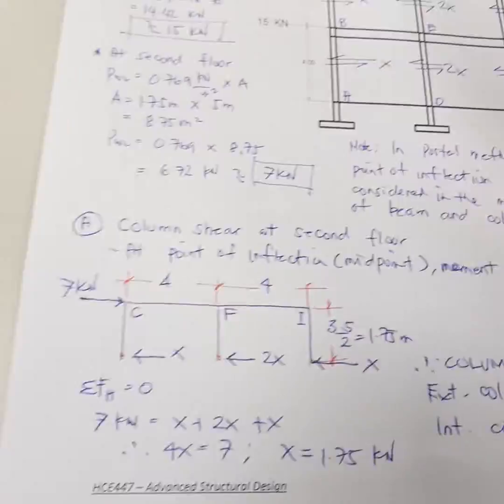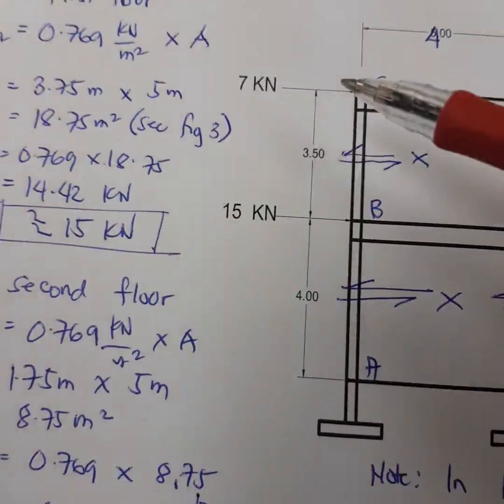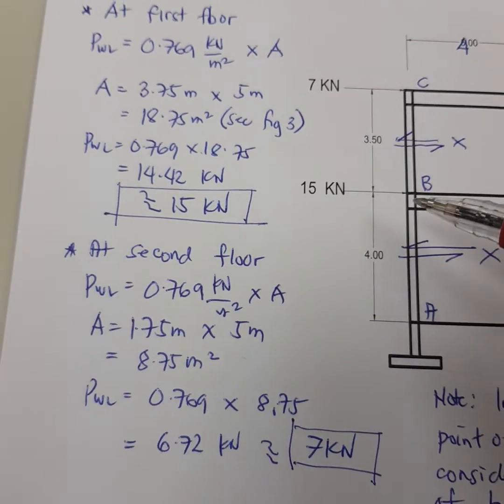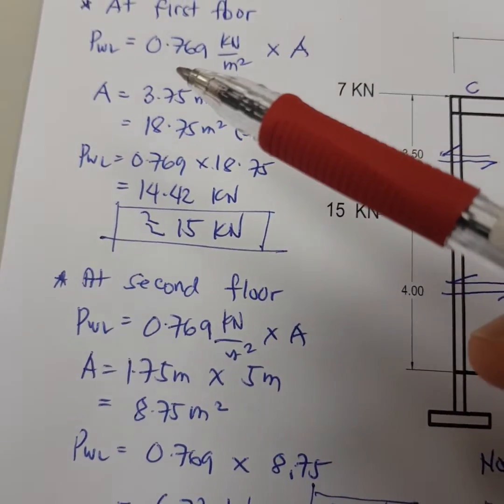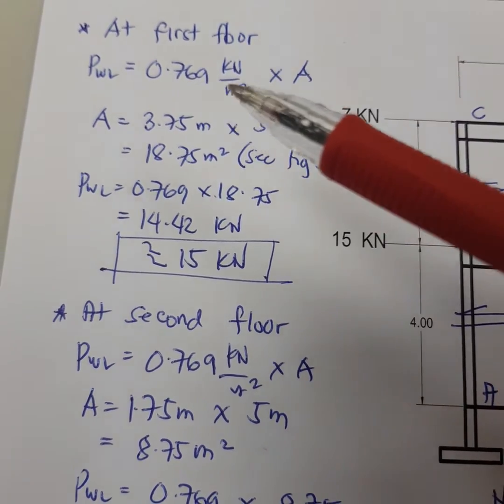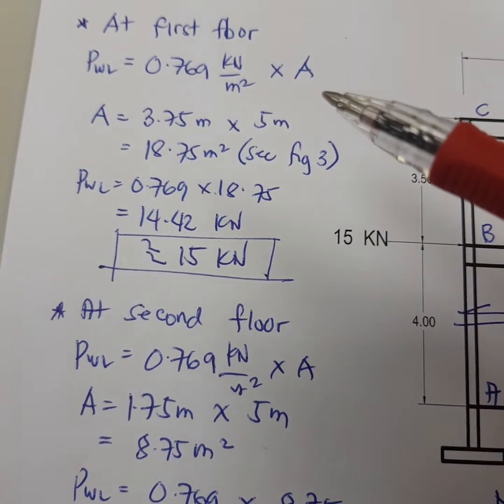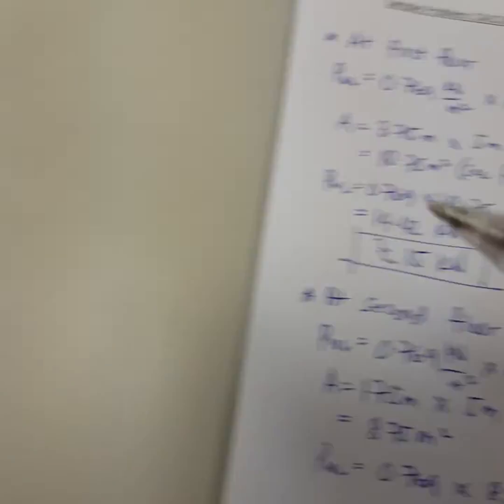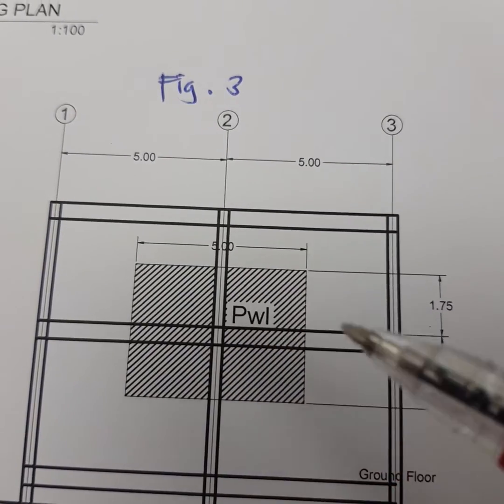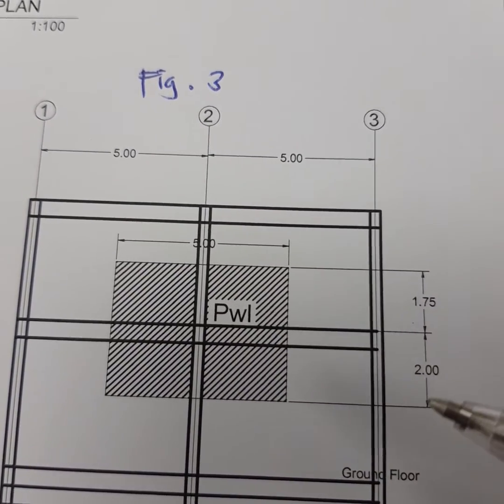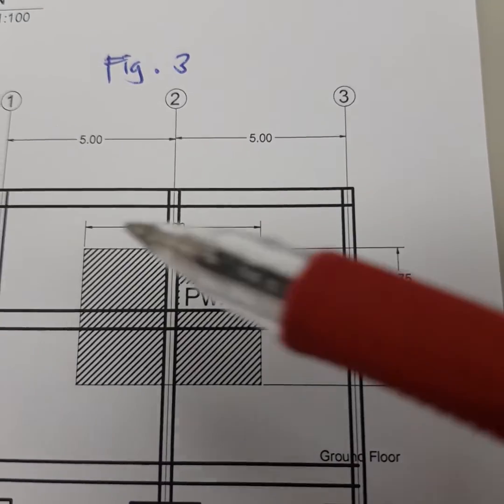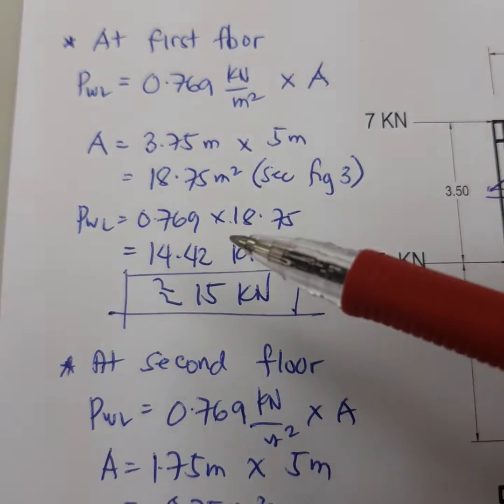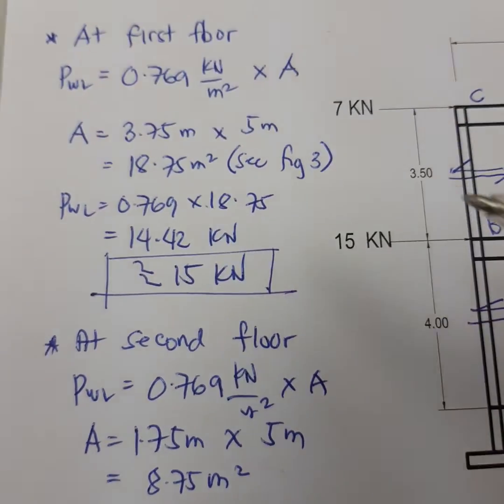For example, here you have 7 kilonewton and 15 kilonewton here. How do you compute 7 kilonewton and 15 here at the first floor? You compute the wind pressure 0.769 and multiply by that area. Check figure 3, it is the area acting on this joint. Half of this height is 1.25, half of 5 and half of 5 becomes 5 itself. So you can compute now the lateral force acting on the first floor which is 15. It's the same way you can compute on the second floor.